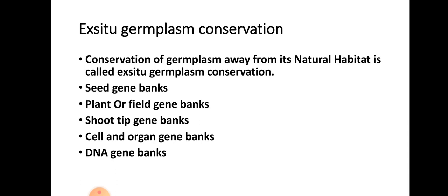Conservation of germplasm away from its natural habitat is called ex situ germplasm conservation. This is exactly opposite to in situ germplasm conservation, where conservation was in the natural habitat where it was growing naturally. Ex situ conservation is in artificial conditions and includes seed gene banks, plant or field gene banks, shoot tip gene banks, cell and organ gene banks, and DNA gene banks.